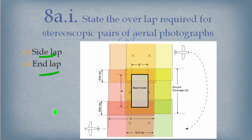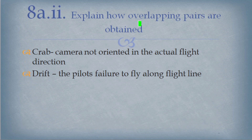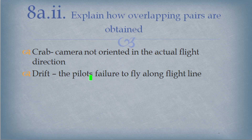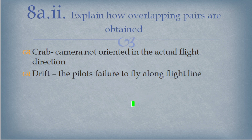We also have the side lap, as you can see in the diagram. Make sure you do more research on this topic covering overlaps and side laps. The next question: explain how overlapping pairs are obtained. This can happen in either of two ways — crab, where the camera is not oriented in the actual flight direction, or drift, where the pilot's failure to fly along the flight line, caused by wind or human error, produces the overlap.